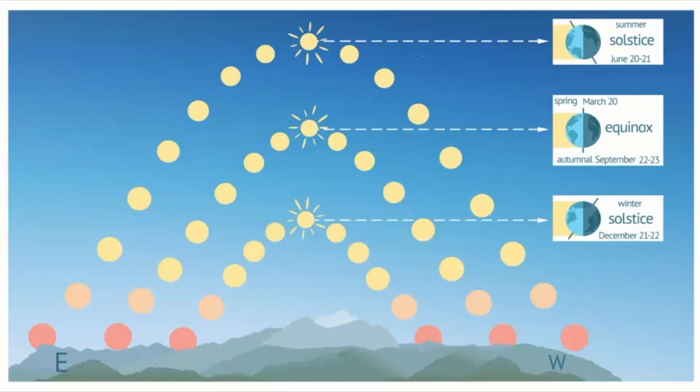The earliest humans spent more time outside than we do and they used the sky as both a clock and calendar. They could easily see that the path of the sun across the sky would change over the course of the year, and these positions were recorded in different areas throughout the world. This is something that all of humanity has been doing in order to have a celestial clock.